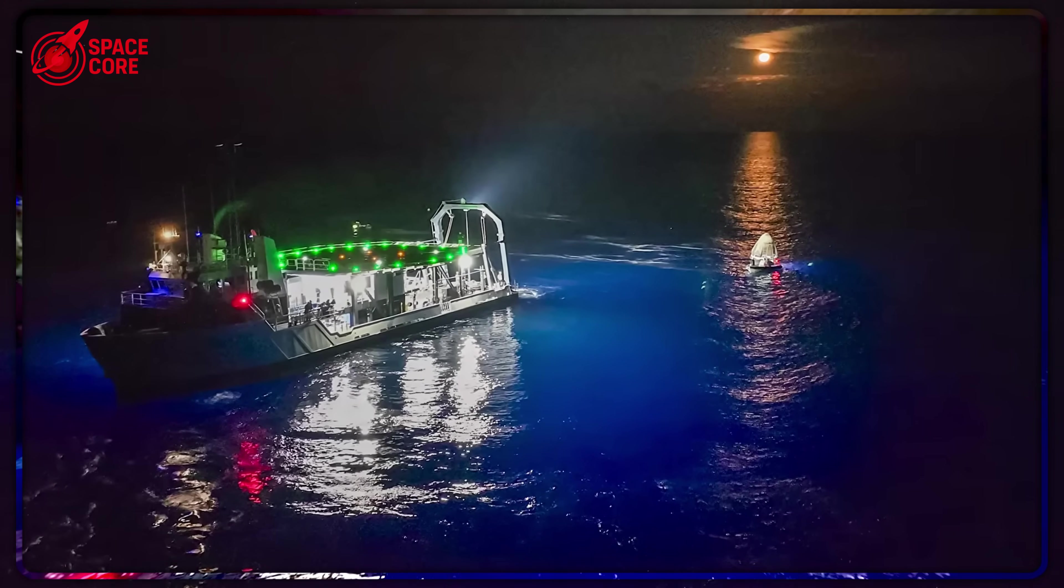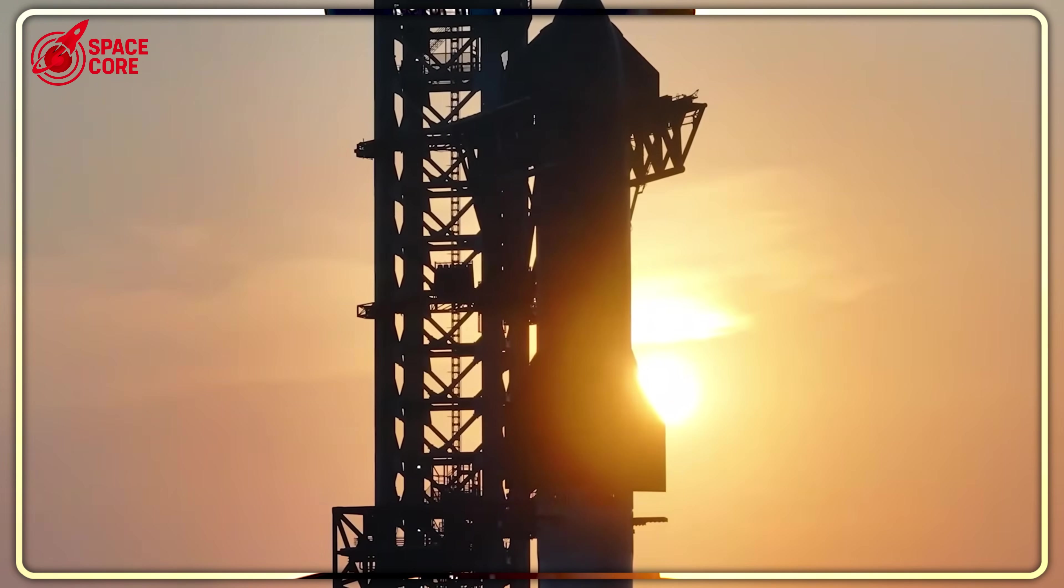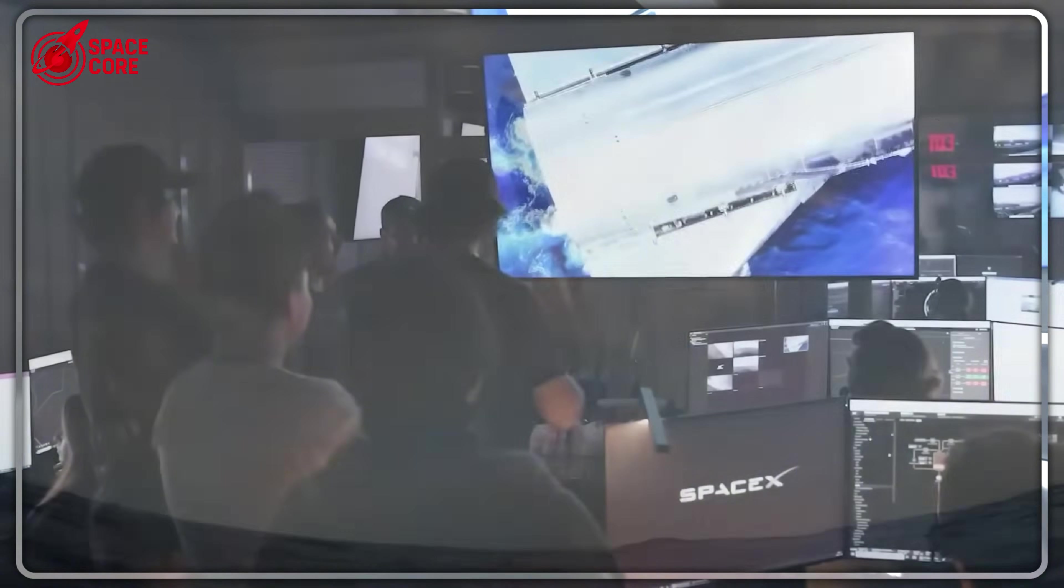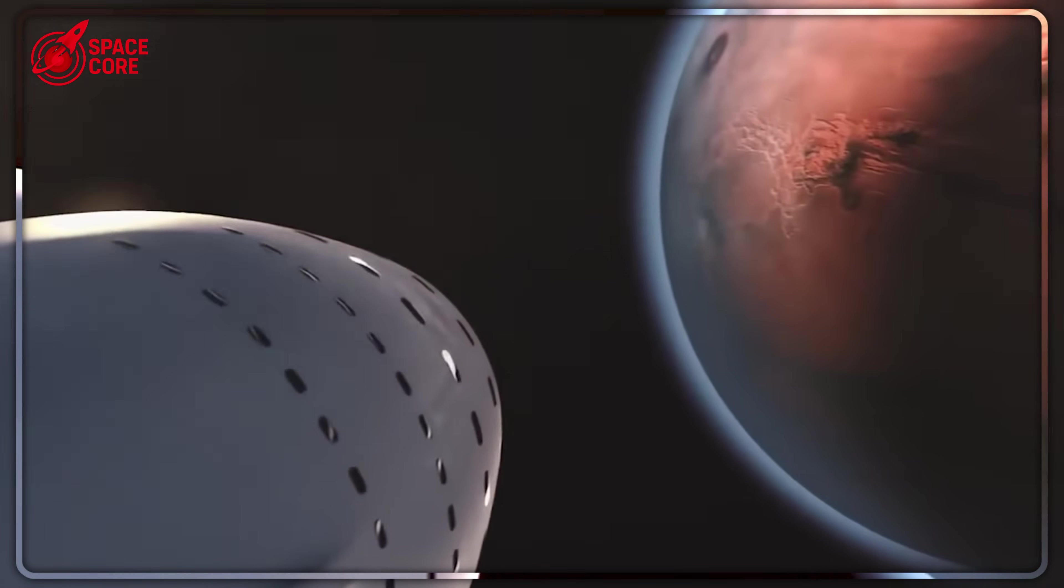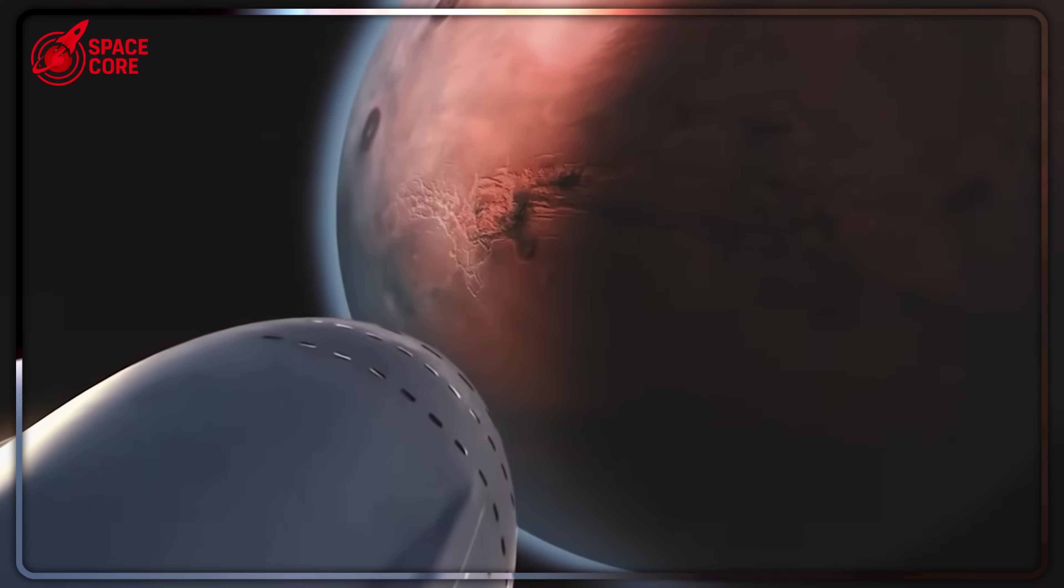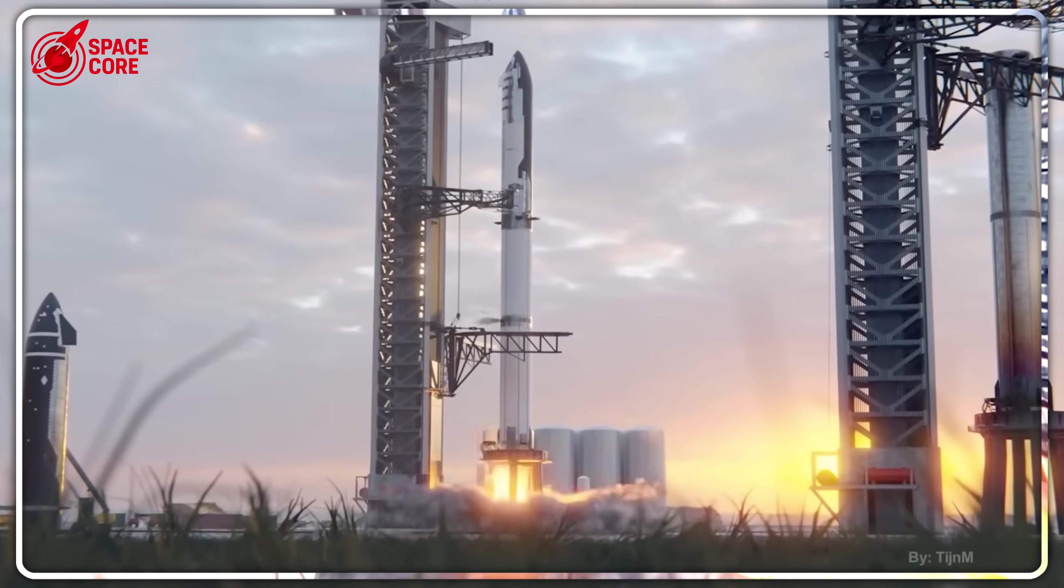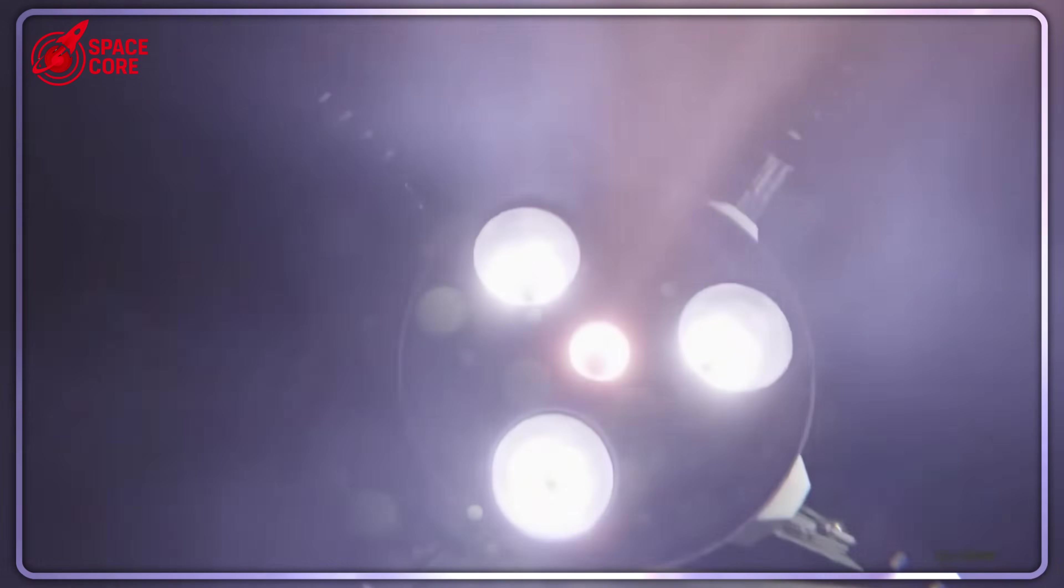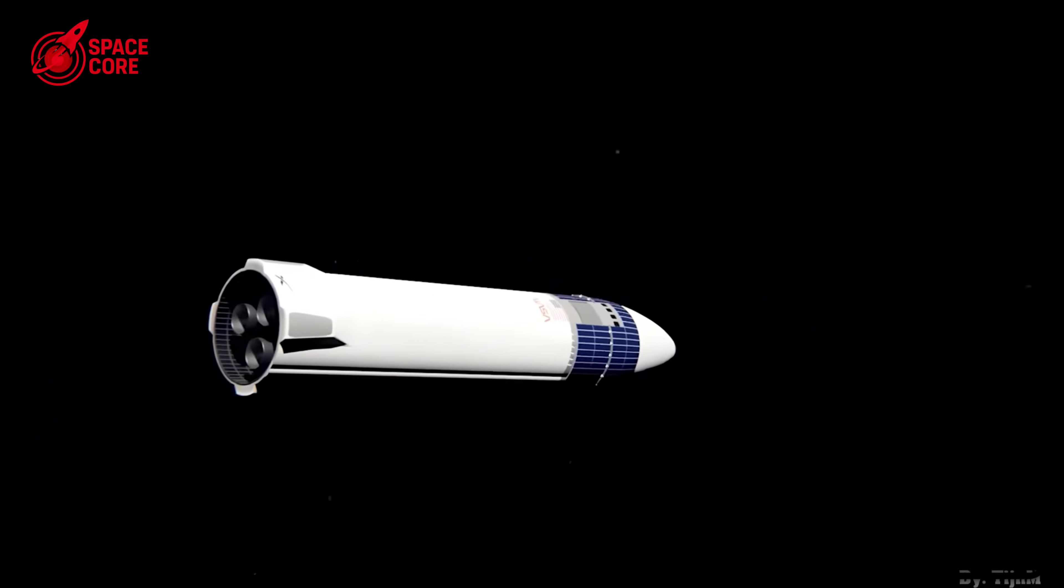So here's Musk's dilemma. Use the 2026 Mars window with unproven Starship technology, or wait until 2028 to 2030 when Starship is fully tested, but competitors might beat SpaceX to Mars. That's why Dragon's retirement timeline is so critical. SpaceX needs to transition from Dragon to Starship fast enough to catch the Mars windows, but safely enough to not kill anyone in the process. But there's one more twist that nobody saw coming.